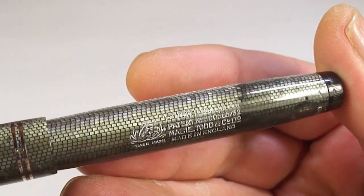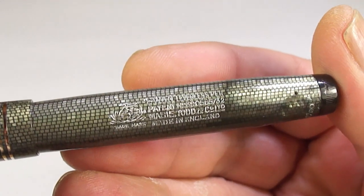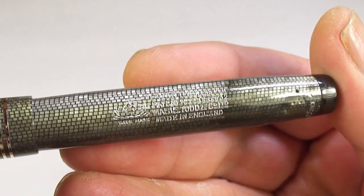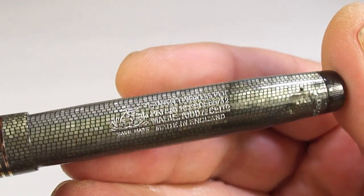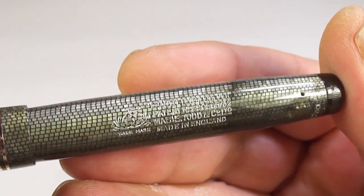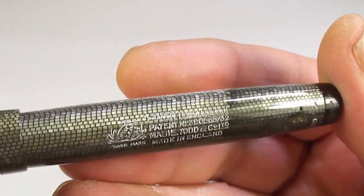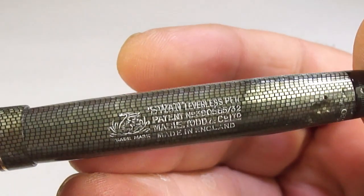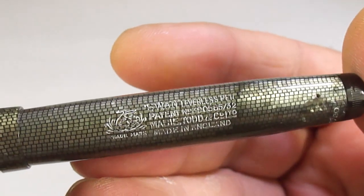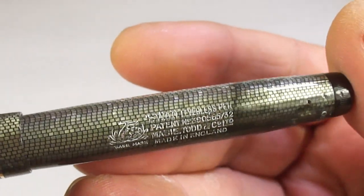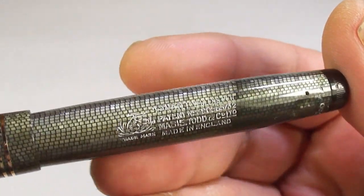You can see nice and clearly, it says Swan leverless pen. It's got the Swan logo to the left there. I think it's got a patent number underneath, made in England, and I think it says maybe Todd and Company as well. A lovely clear imprint. I've highlighted it because generally it's a little bit difficult to show on camera with these lights that I actually use.